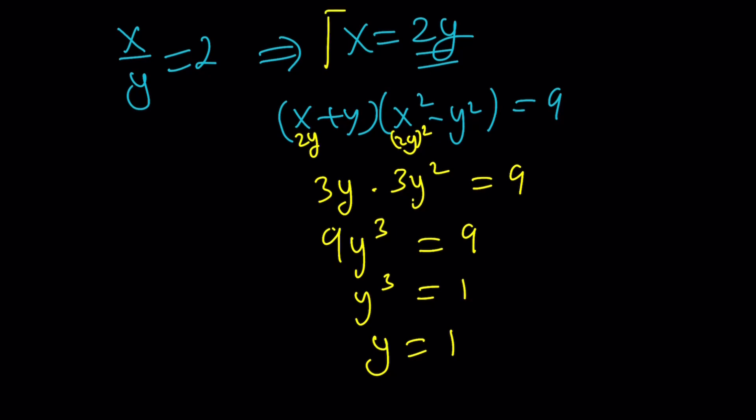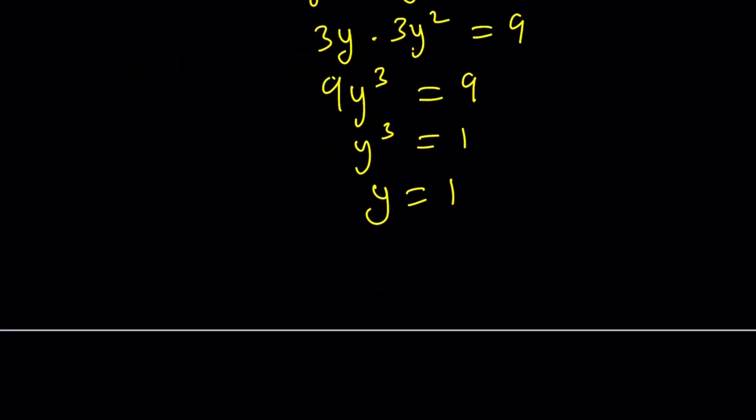Of course, if we're dealing with real solutions, y is going to be 1. Since y is 1, x is 2y, it's just doubled, x is equal to 2. So, we got 2 comma 1 from here. Make sense? Awesome.